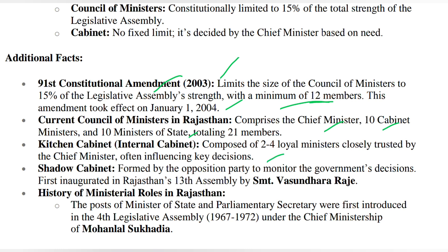Kitchen cabinet means the chief minister has 2–4 trusted ministers on whom they rely heavily. These are the CM's loyal ministers — this term became more famous during Indira Gandhi's time. Shadow cabinet is formed by the opposition party; they keep watching government decisions. In Rajasthan, this concept was first inaugurated by Vasundhara Raje.